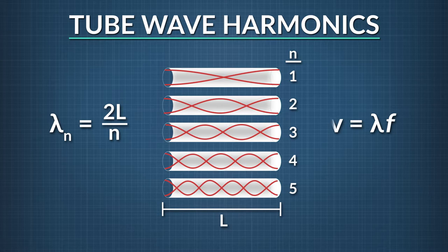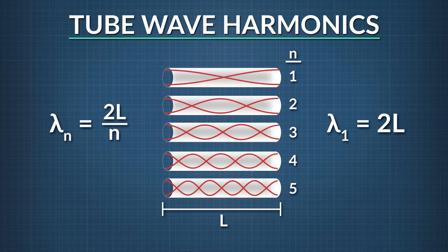Likewise, since wave velocity equals wavelength times frequency, you can substitute two times the length of the air column for wavelength to find the velocity of sound through the air column for the fundamental frequency.